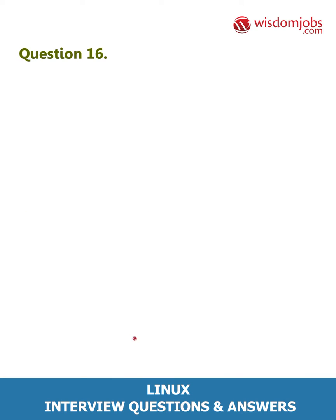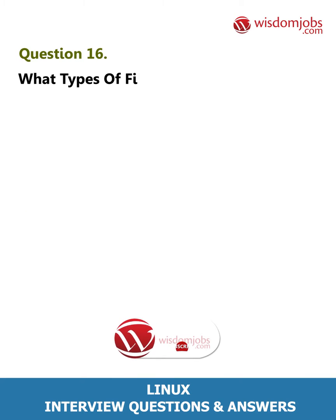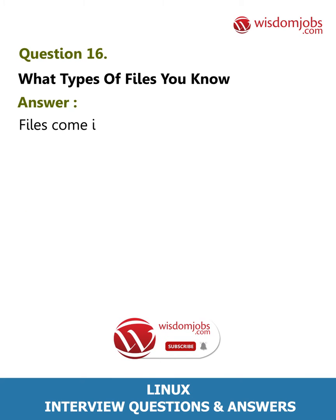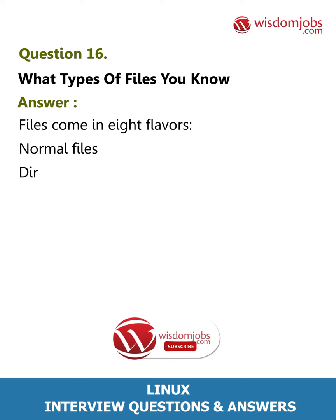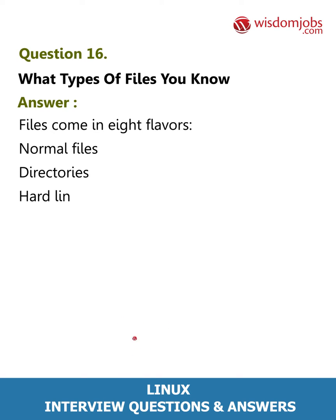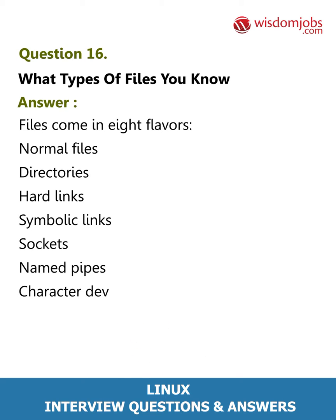Question 16: What types of files do you know? Answer: Files come in eight flavors — normal files, directories, hard links, symbolic links, sockets, named pipes, character devices, and block devices.